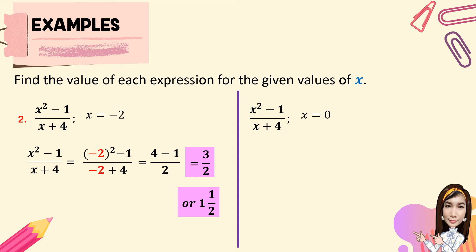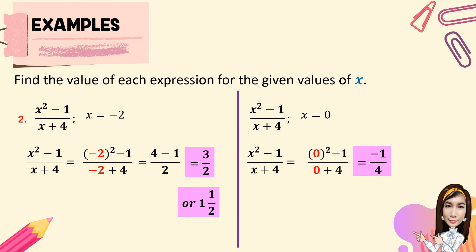Next, the value of x squared minus 1 all over x plus 4 when x equals 0. Substituting: 0 squared minus 1 all over 0 plus 4. Zero times zero is still 0, so 0 minus 1 is negative 1. And 0 plus 4 is positive 4. Any number added or subtracted to 0 is still that number. So the value when x equals 0 is negative 1 over 4, or negative one fourth.